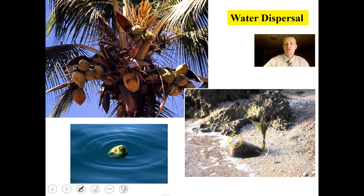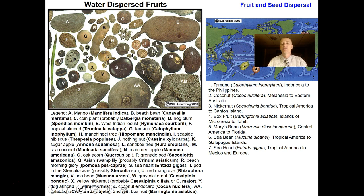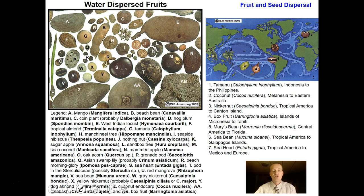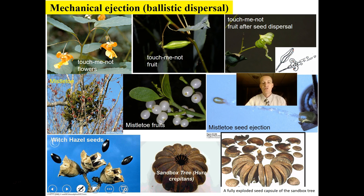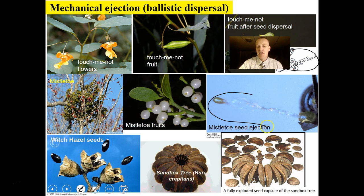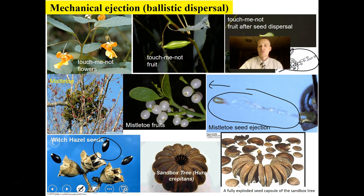Water dispersal is common — coconuts float and can survive in salt water, landing on another island. There are many water-dispersed seeds that exploit ocean currents to spread around the world. Some seeds are mechanically ejected: touch-me-nots shoot seeds when touched, mistletoe uses mechanical ejection, witch hazel shoots seeds, and there's even a squirting cucumber — many different kinds use ballistic dispersal.